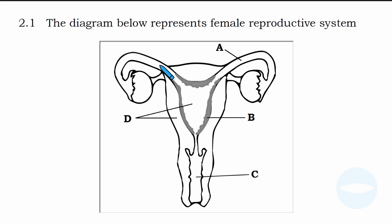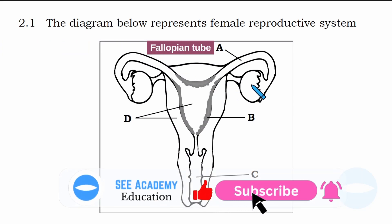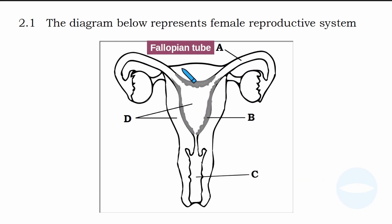Here is the diagram. Before I answer the questions, I would like to label the parts. Question 2.1 says the diagram below represents the female reproductive system. Part A is this tube — the name of this tube is called the fallopian tube. The fallopian tube connects the uterus and the ovary. After ovulation, the ovum travels via the fallopian tube.